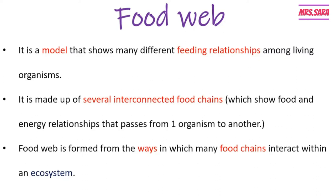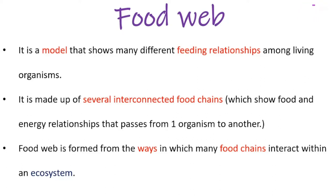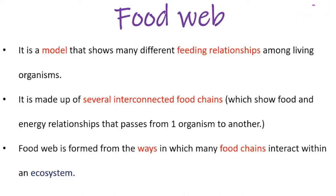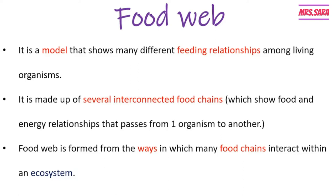In the food chain we can find different feeding relationships between different organisms — as the petal eats the grass, this is a feeding relationship; as the frog eats the petal, this is also a feeding relationship. A food web is a model that shows many different feeding relationships among living organisms, and it is made up of several interconnected food chains. This means the food web has many food chains that are connected to each other.